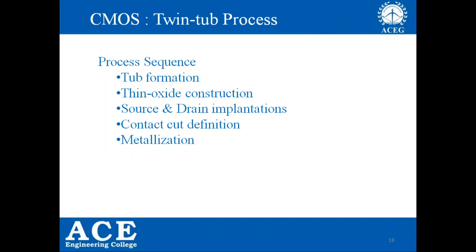Coming to the next step: thin oxide layer construction. This thin oxide layer provides insulation between the polysilicon gate and the substrate. Construction of the thin oxide layer is essentially the construction of the gate. The next step is formation of source and drain implants, followed by contact cut definition, and the last step is metallization. These are the important process steps.